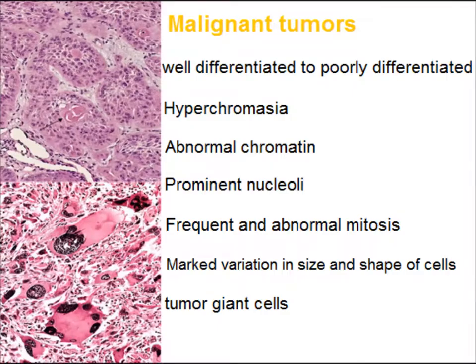Microscopically, malignant tumors are well differentiated to poorly differentiated. Features include hyperchromasia, abnormal chromatin, prominent nucleoli, frequent and abnormal mitosis, marked variation in size and shape of cells called pleomorphism, and tumor giant cells.